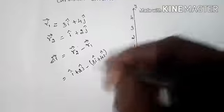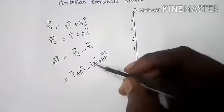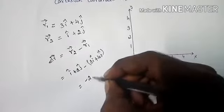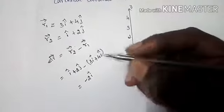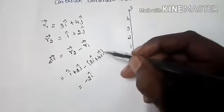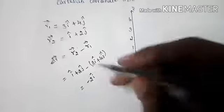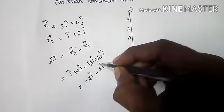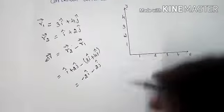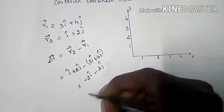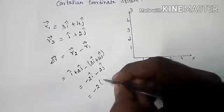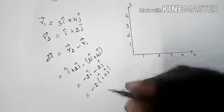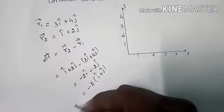Subtracting: i minus 3i gives minus 2i-cap, and 2j minus 4j gives minus 2j-cap. So ΔR vector equals minus 2i-cap minus 2j-cap, which can be written as minus 2 times (i-cap plus j-cap). This is the displacement vector ΔR.